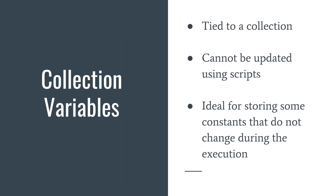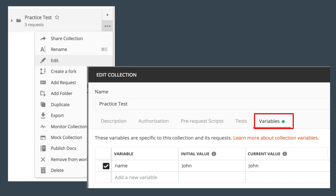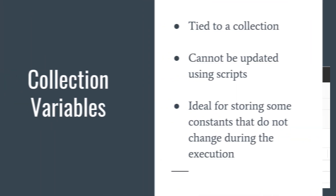Collection variables are a relatively recently introduced feature in Postman, but they don't quite work as I would have expected. They are tied to a collection, but unfortunately you cannot update or create collection variable values from scripts, which limits what you can do with them. Ideally they would be a perfect replacement for environment variables if you only have one environment, but since you can't interact with them from scripts, they are not very useful. They are best for storing constants that do not change during execution.